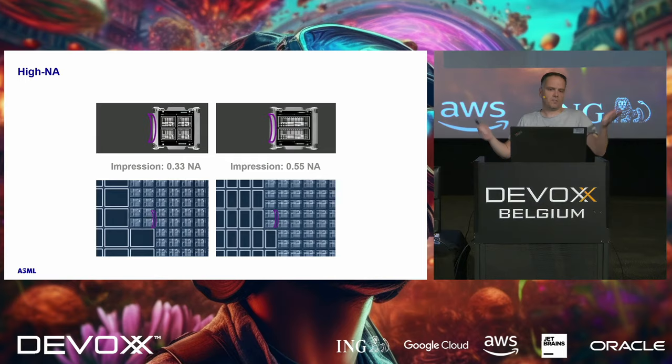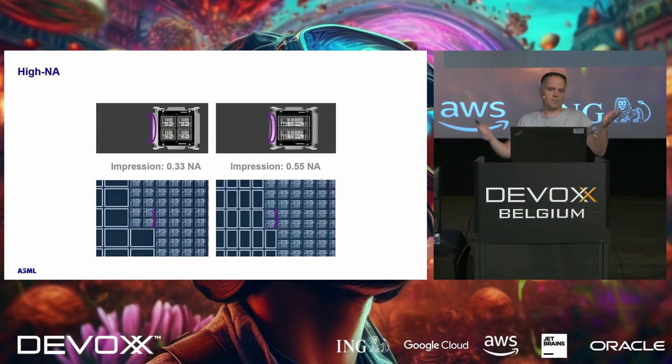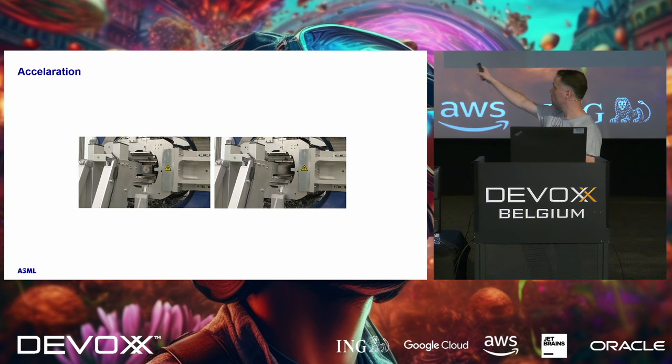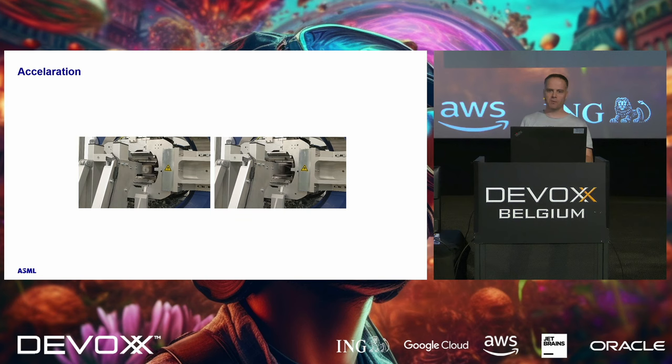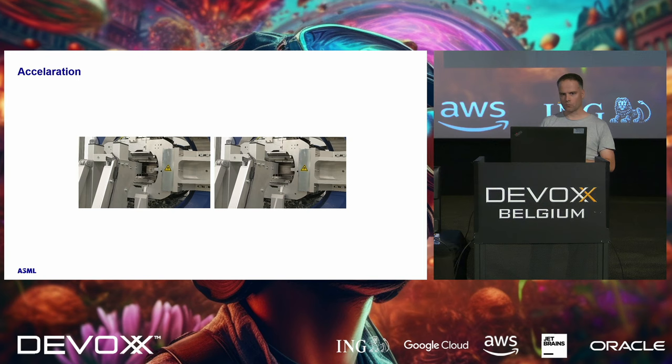The reticle on the new machine moves with 32 Gs back and forth. So that fast is basically how the chips are being printed. Apparently some colleagues actually made this work.